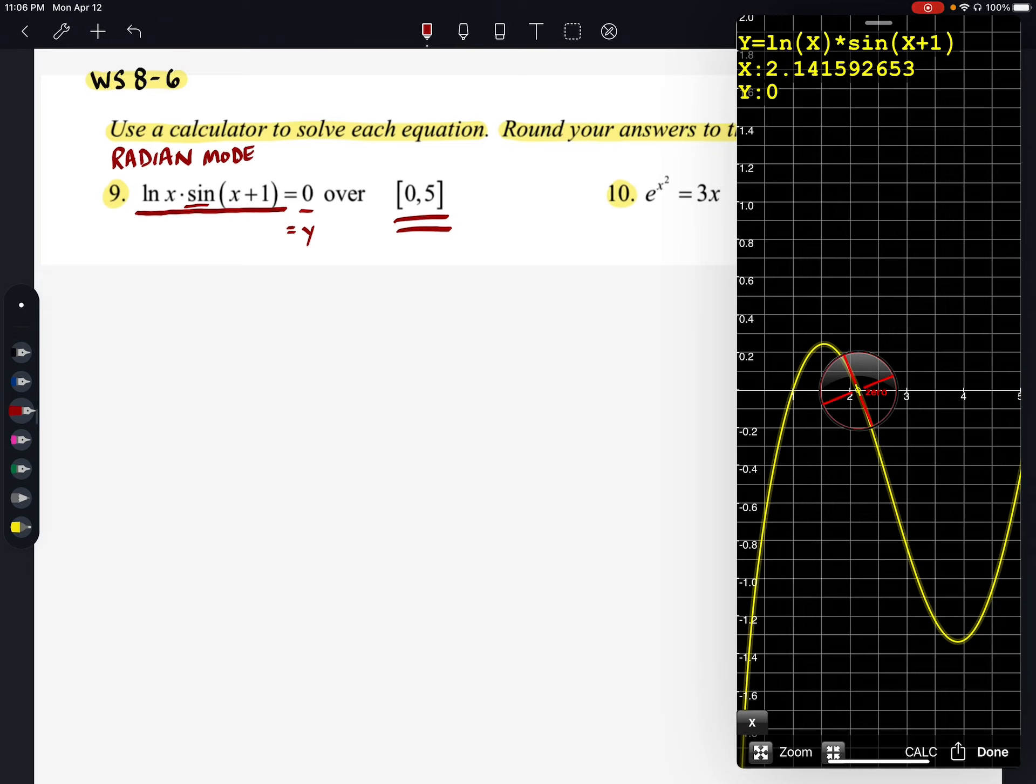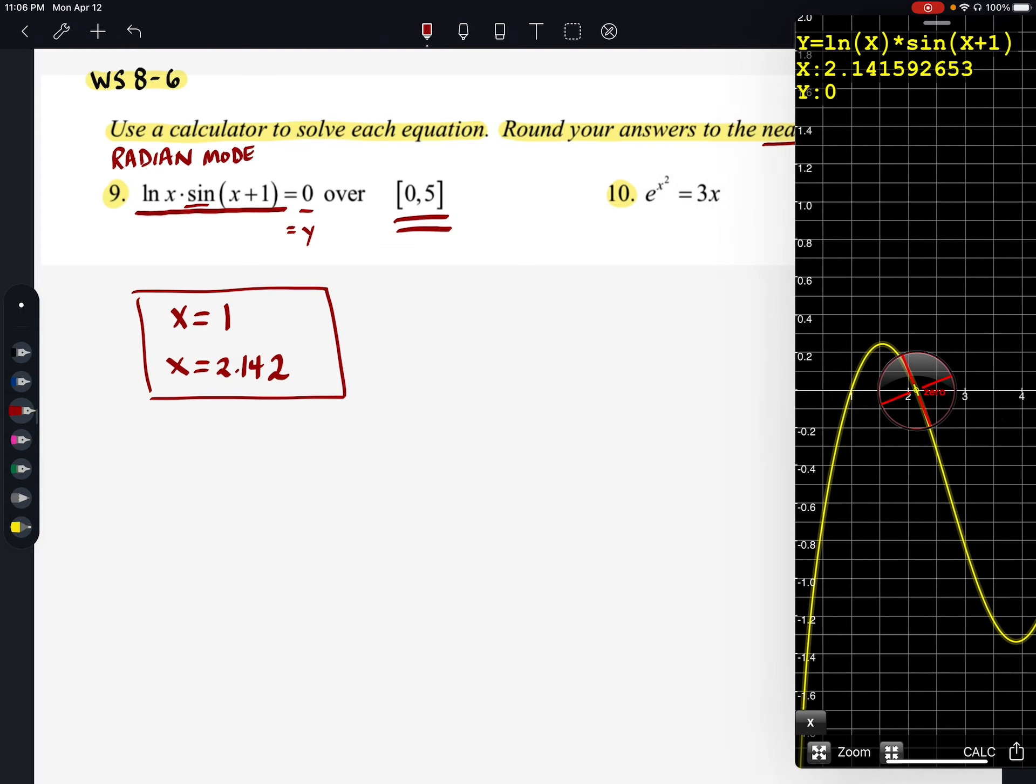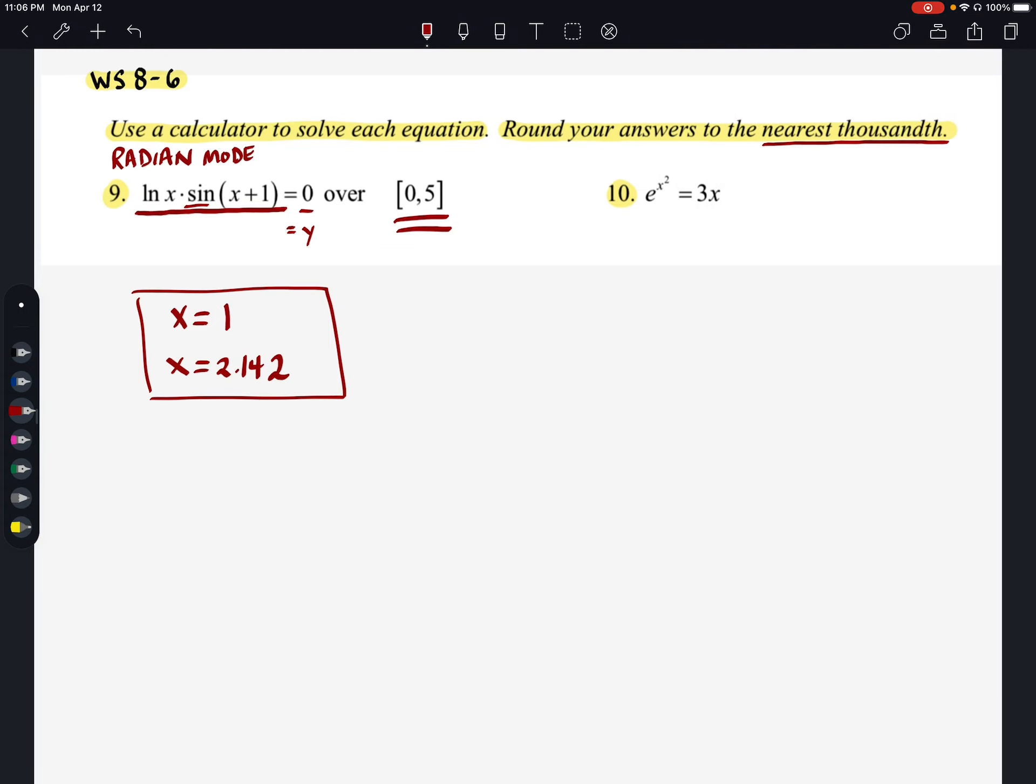OK, so we get here X equals one. And we get that X equals 2.142. OK, so remember your calculator needs to be in radians. Otherwise it may not have come out that same way.